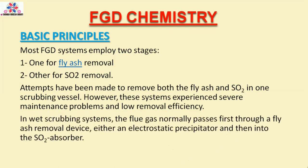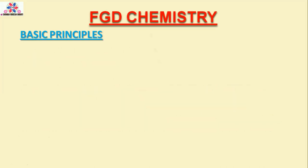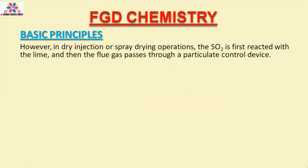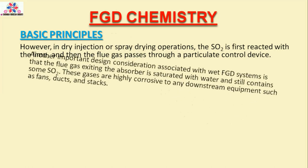In wet scrubbing systems, the flue gas normally passes first through a fly ash removal device — either an electrostatic precipitator — and then into the SO2 absorber. However, in dry injection or spray drying operations, the SO2 is first reacted with the lime, and then the flue gas passes through a particulate control device.